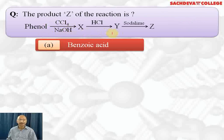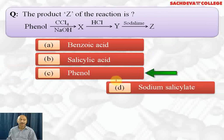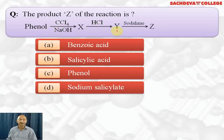Next question: the product Z of the reaction — phenol reacts with CCl4 and NaOH to give X, which is acidified to get Y, and Y is heated with soda lime to get Z. Options are benzoic acid, salicylic acid, phenol, and sodium salicylate. In the first step, phenol reacts with CCl4 and 4 moles of NaOH to form sodium salicylate (X). Sodium salicylate when acidified gives salicylic acid (Y). Salicylic acid treated with soda lime undergoes decarboxylation — the carboxylic acid group is removed — giving phenol (Z). The correct answer is phenol.